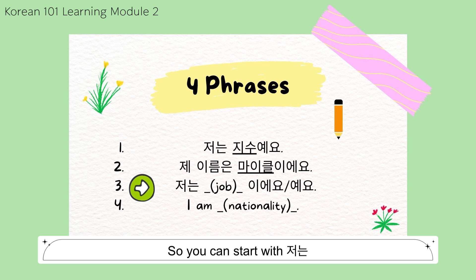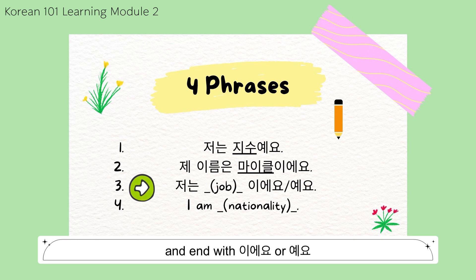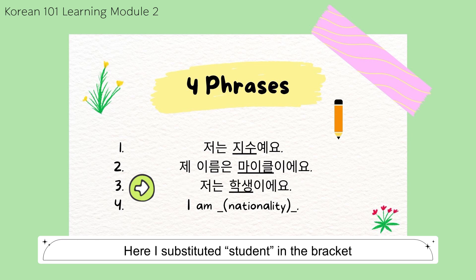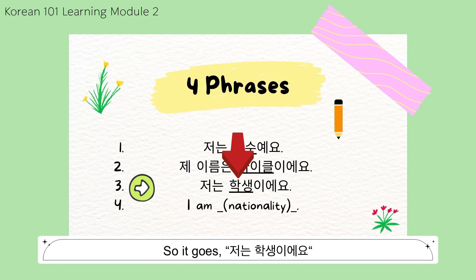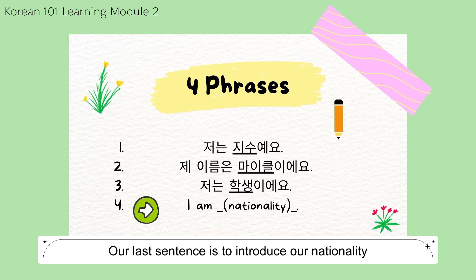You can start with 저는, then a job vocabulary word, ending with 이에요 or 예요. Here I substituted 'student' in the bracket, so it goes 저는 학생이에요.